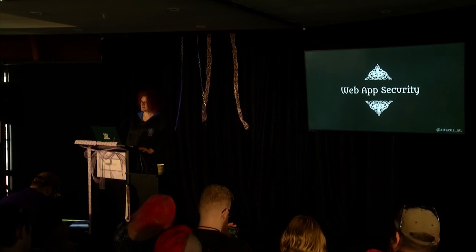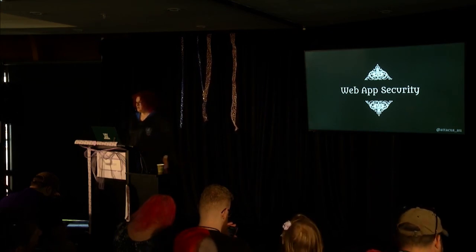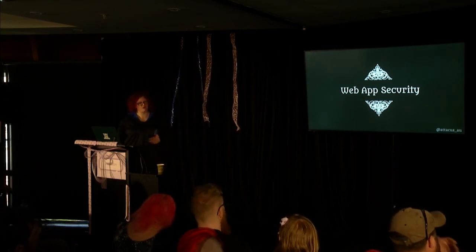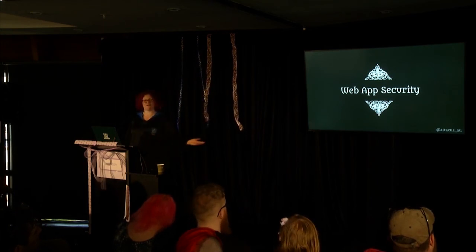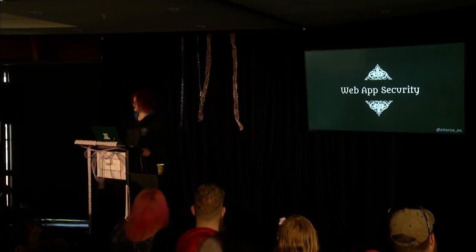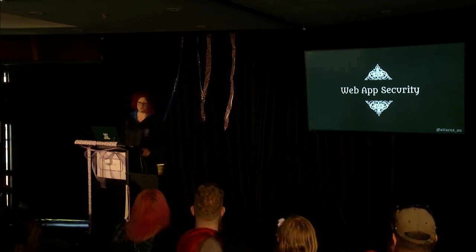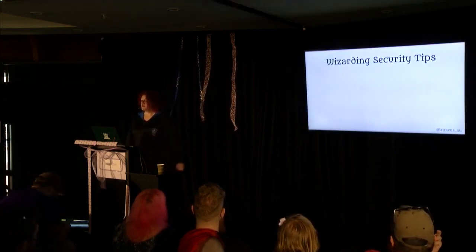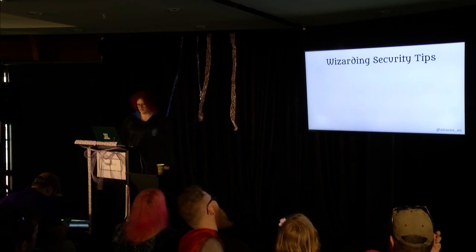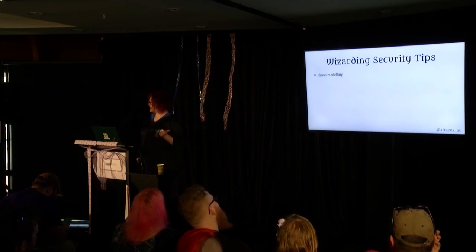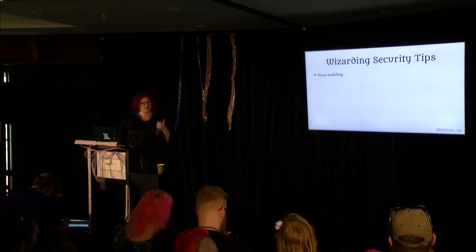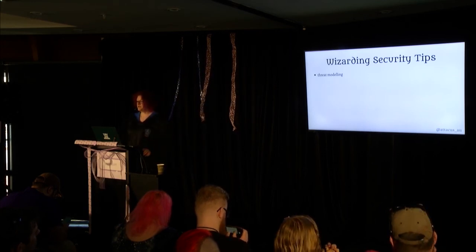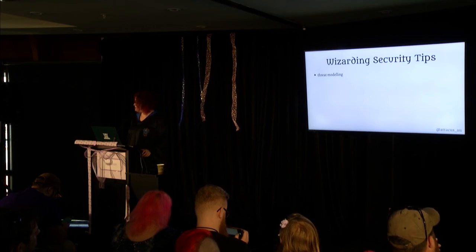So what does all of this boil down to for web app security? It's a tricky space, and those tasked with defending apps have the extra hard job of anticipating attackers' work. Here are the top four wizarding security tips. First, threat modeling is really handy for anticipating what an attacker might try and countering against it. Think about who's likely to attack you, what they're likely to try, and how you might stop them. Then build those things and refine them as you learn more.